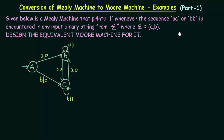In the last lecture, we studied how to convert a Mealy machine to a Moore machine. In this lecture we will see another example of that conversion. Given below is a Mealy machine that prints 1 whenever the sequence AA or BB is encountered in any input binary string from sigma star, where sigma equals AB. Design the equivalent Moore machine for it.